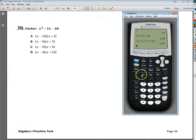x minus 10. Close it out. x plus 3. Close that out. Hit enter. You get zero. Zero and 140 are not the same thing. So, I know for a fact that the answer to number 30 is D.